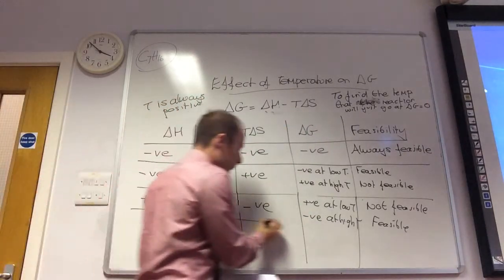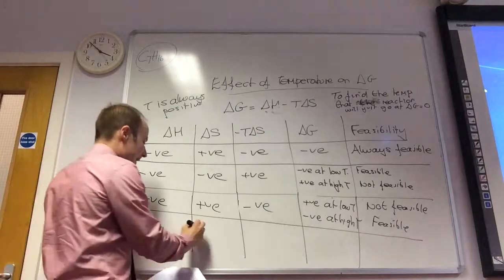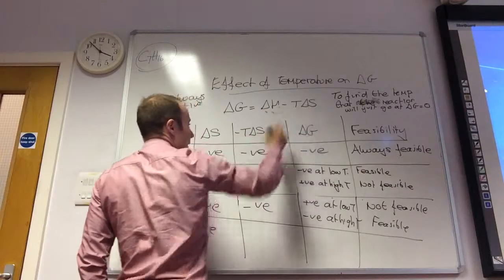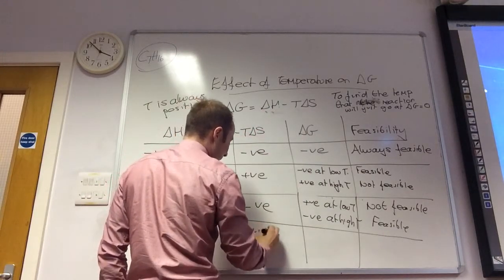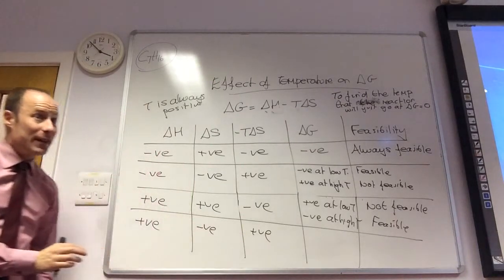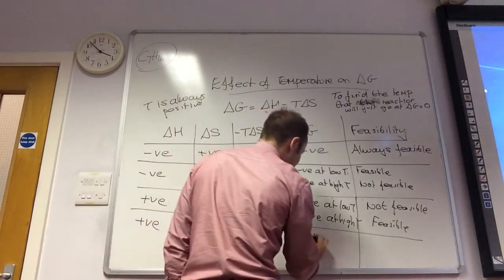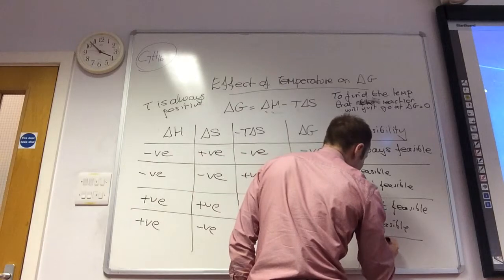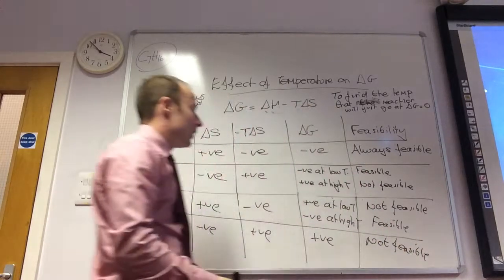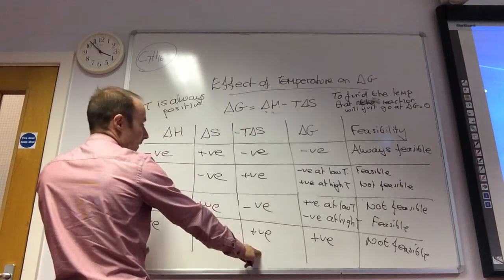The final case: delta H is positive and delta S is negative. If delta S is negative, then minus T delta S is going to be positive. Now you've got two positive figures. So delta G is always going to be positive, and therefore the reaction is not feasible — whatever you do, at any temperature, it will not be feasible, because you've got two positive figures.